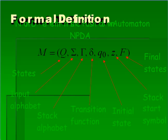It is a seven-tuple machine: Q for states, sigma for input alphabets, followed by stack alphabet, delta for transition function, q0 for initial state, Z for stack start symbol, and F for final states.